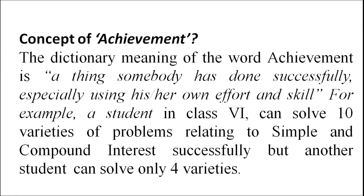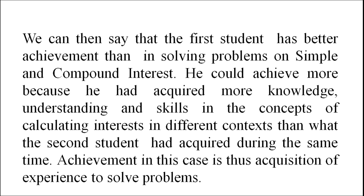For example, a student in class 6 who can solve 10 varieties of problems relating to simple and compound interest successfully, while another student in the same class can solve only four varieties. We can say the first student has better achievement because he acquired more knowledge, understanding, and skills in calculating interest in different contexts than the second student. So achievement here is the acquisition of experience to solve problems.